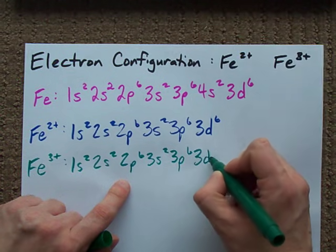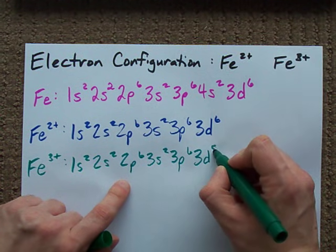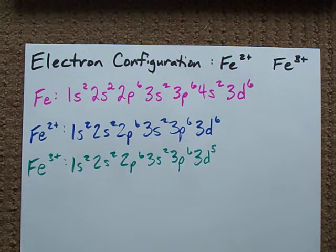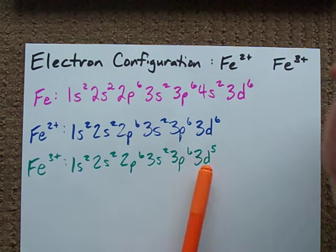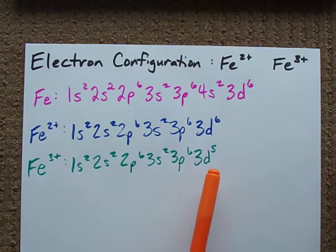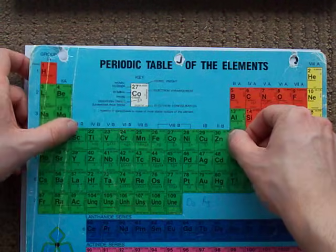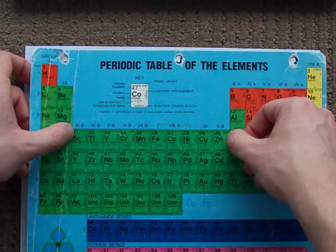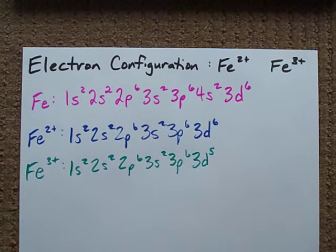3d, and we remove an electron to make it 3d5. Now, this is actually a stable configuration, because the d orbitals are just fine with being exactly half filled, and the d's can hold 10 electrons, since the d block is 10 atoms wide.